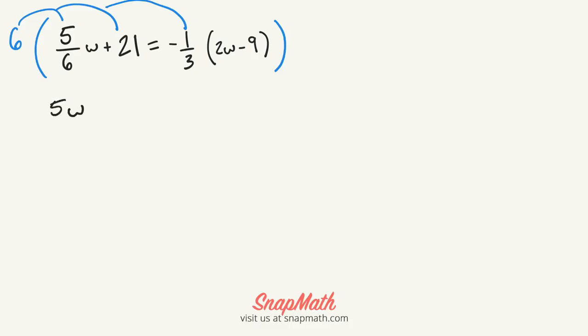Then we distribute the 6 to the 21. That would be 126 equals... Then we distribute the 6 to the negative 1 third, and that gives us negative 2.